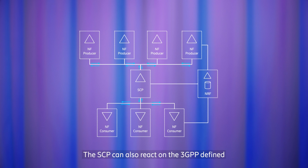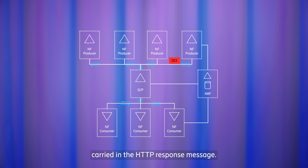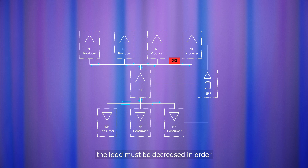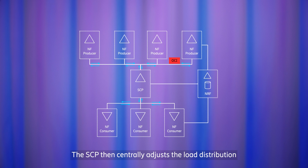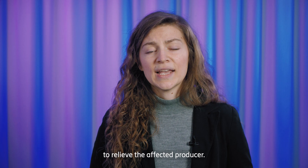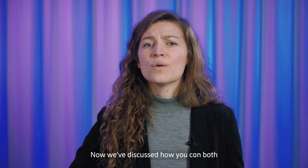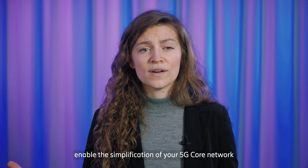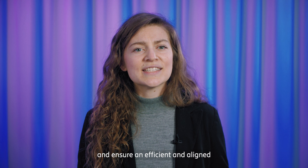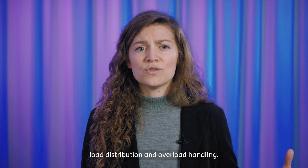The SCP can also react on the 3GPP-defined Overload Control Information Header, or OCI, carried in the HTTP response message. This allows an NF to indicate by what percentage the load must be decreased in order to return to a sustainable rate. The SCP then centrally adjusts the load distribution to relieve the affected producer. Now, we've discussed how you can both enable the simplification of your 5G core network and ensure an efficient and aligned load distribution and overload handling.